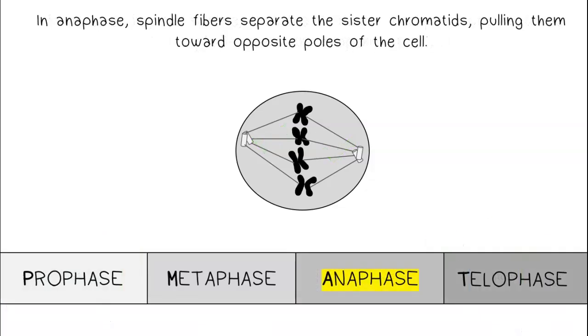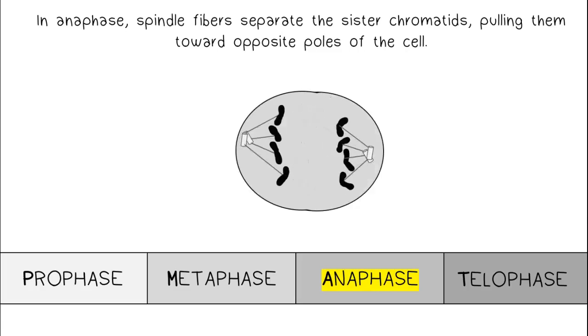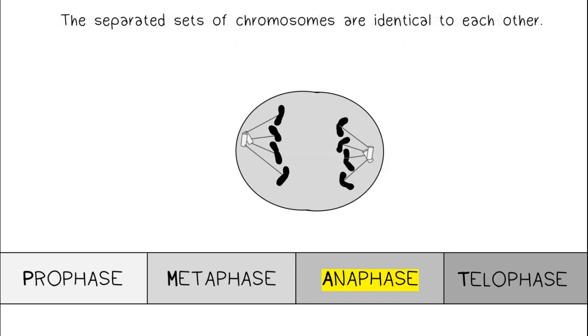In anaphase, spindle fibers separate the sister chromatids, pulling them toward opposite poles of the cell. The separated sets of chromosomes are identical to each other.